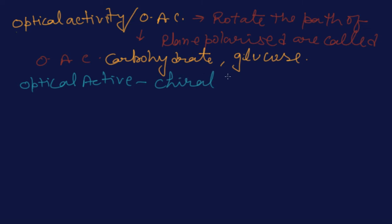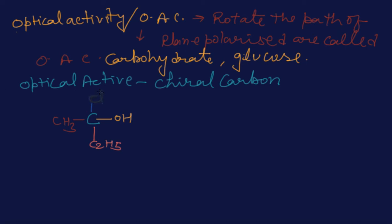One more thing needed for optical activity: optically active compounds have a chiral carbon. The chiral carbon is that carbon whenever any carbon is attached with four different groups — it stands for asymmetry. Whenever four different groups are attached to a carbon, that is called a chiral carbon, and it represents asymmetry.